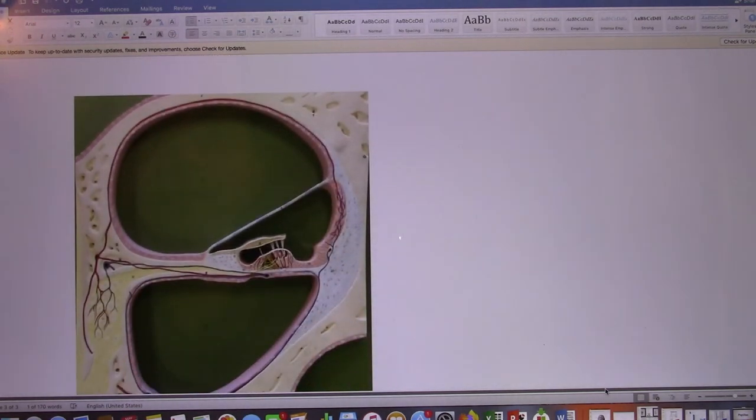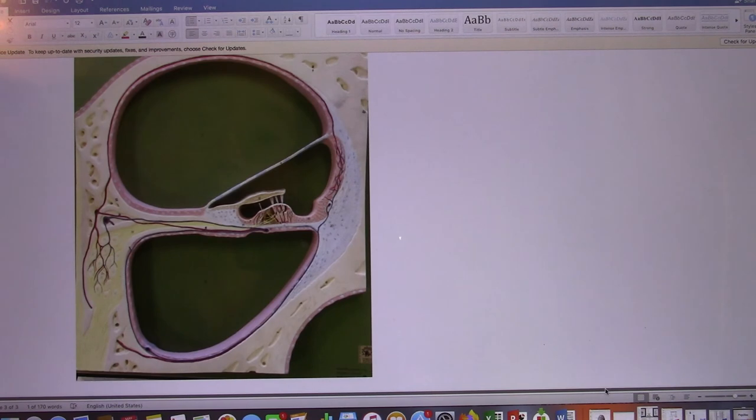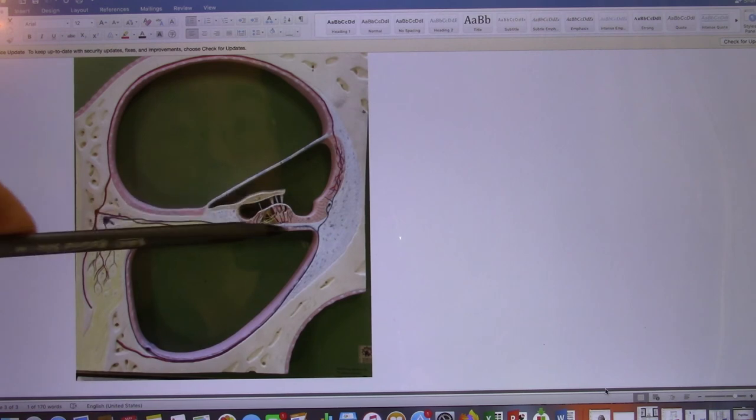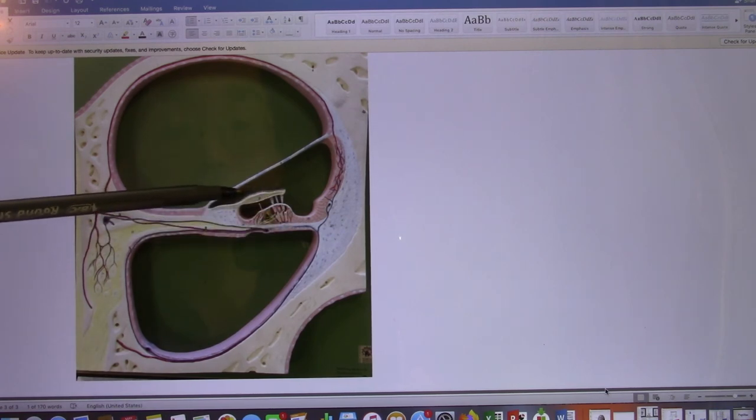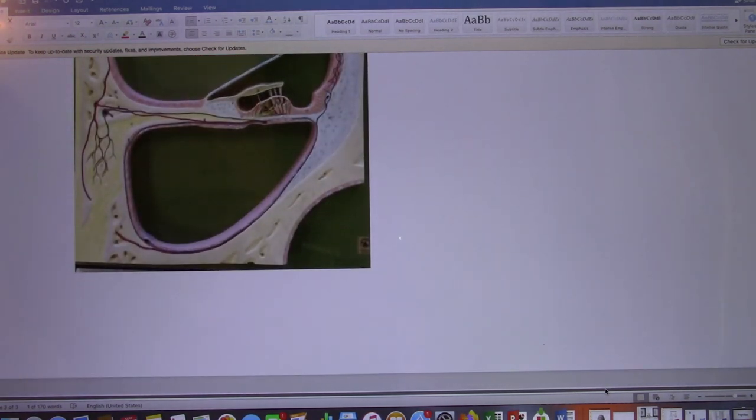So let's look at the organ of Corti model. So this one cochlea, you cut it, you found most of them empty space. And you have the perilymph, the endolymph goes through. So the organ of Corti, that's this one. So that's the tectorial membrane, and that's the basilar membrane, and that's the hair cells. Okay, that's it.